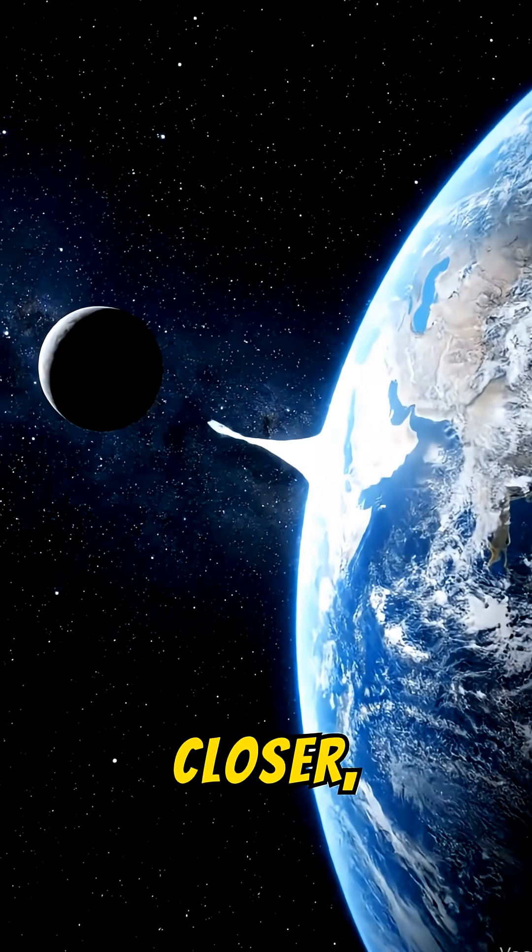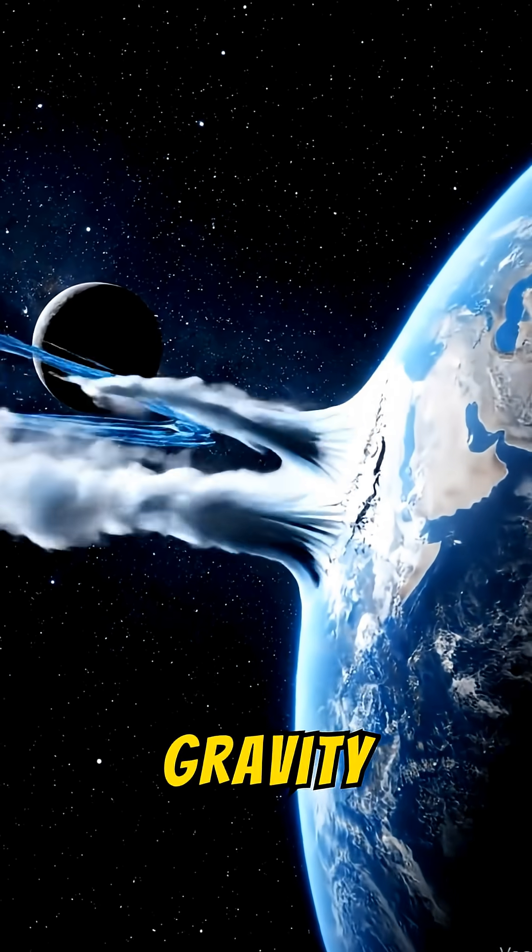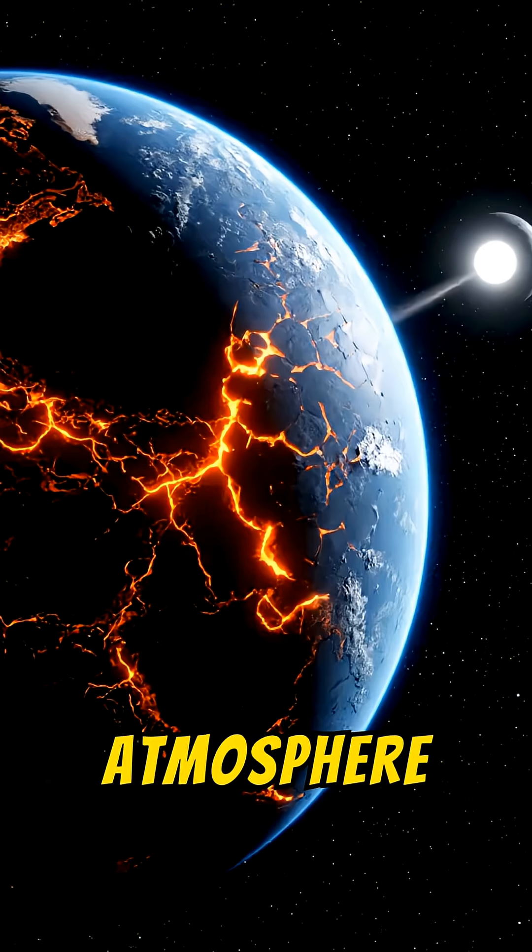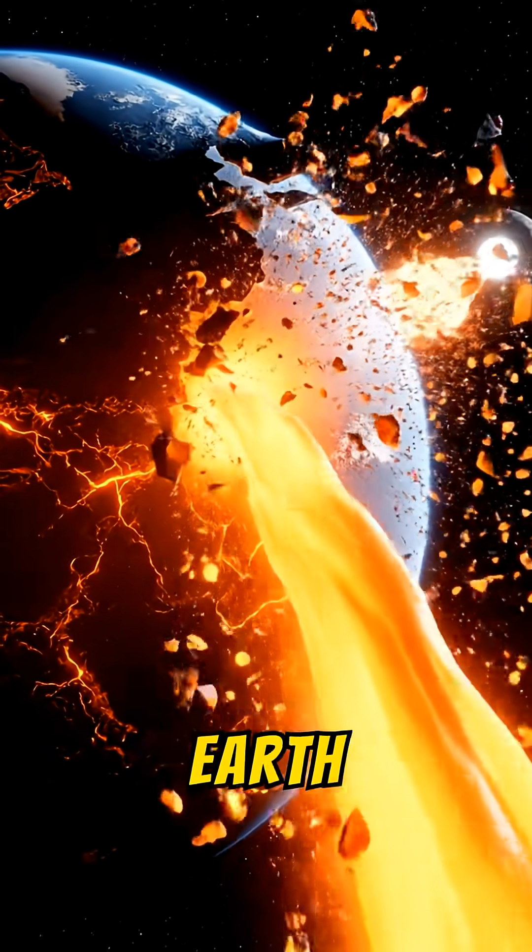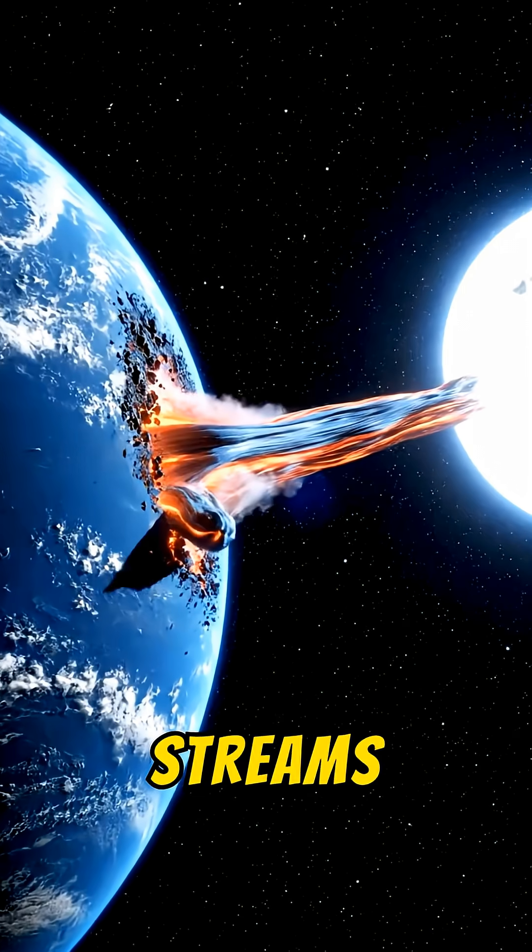As Earth spiraled closer, the neutron star's gravity would stretch the planet apart. The atmosphere would be stripped away, the mantle would flow like liquid, and Earth would begin to tear into long streams of matter.